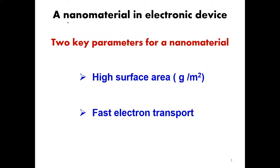Let's talk about nanostructure materials and how we are using these materials in advanced electronic devices. By advanced electronic devices, I mean sensors, catalysis, solar cells, lithium-ion batteries, supercapacitors, medical purposes, and water filtration. In all these electronic devices, we require nanostructure material.